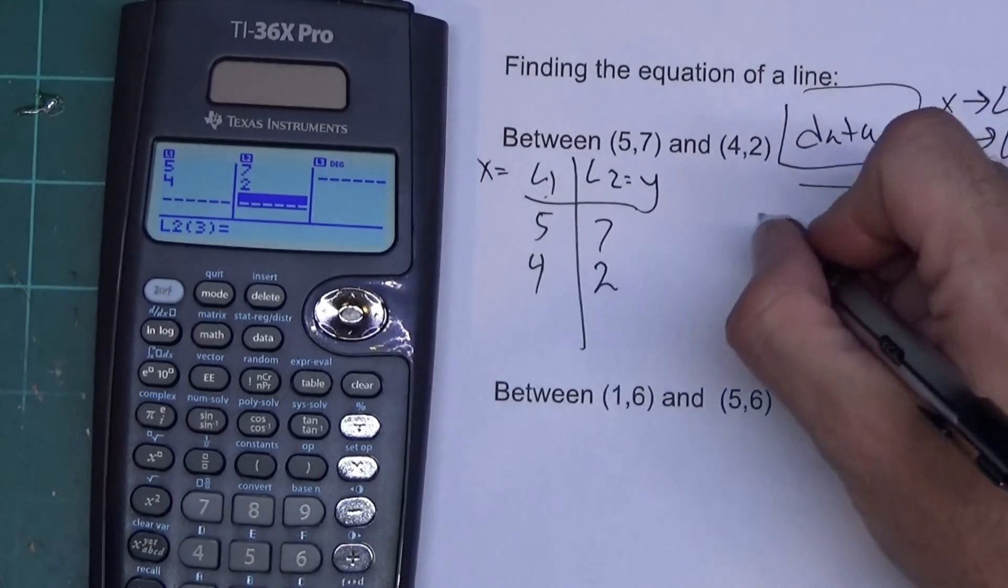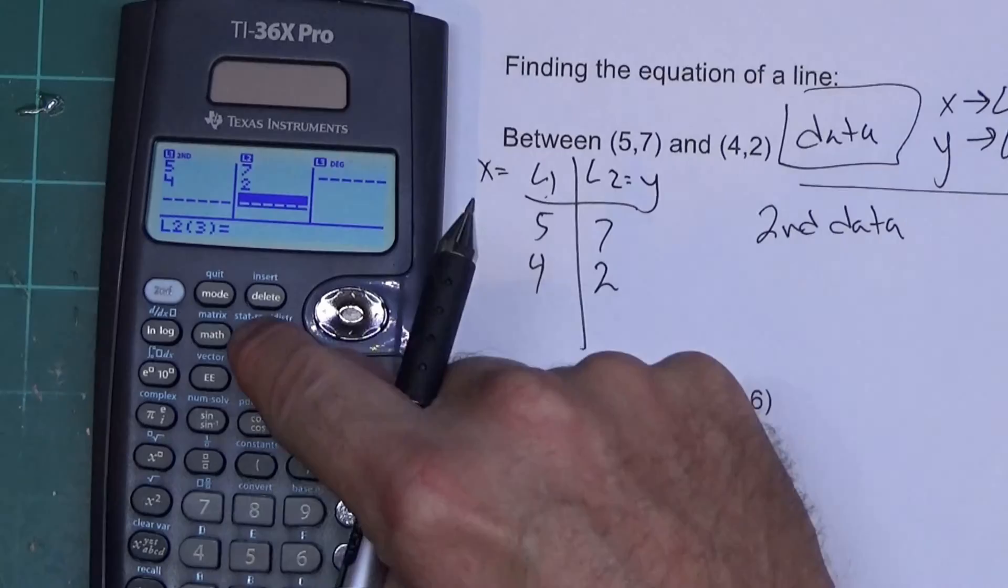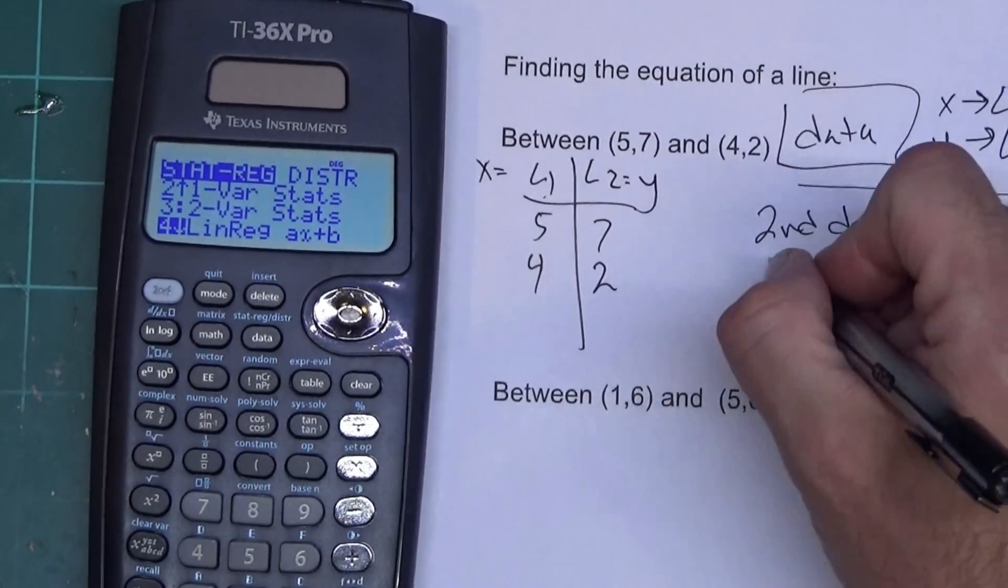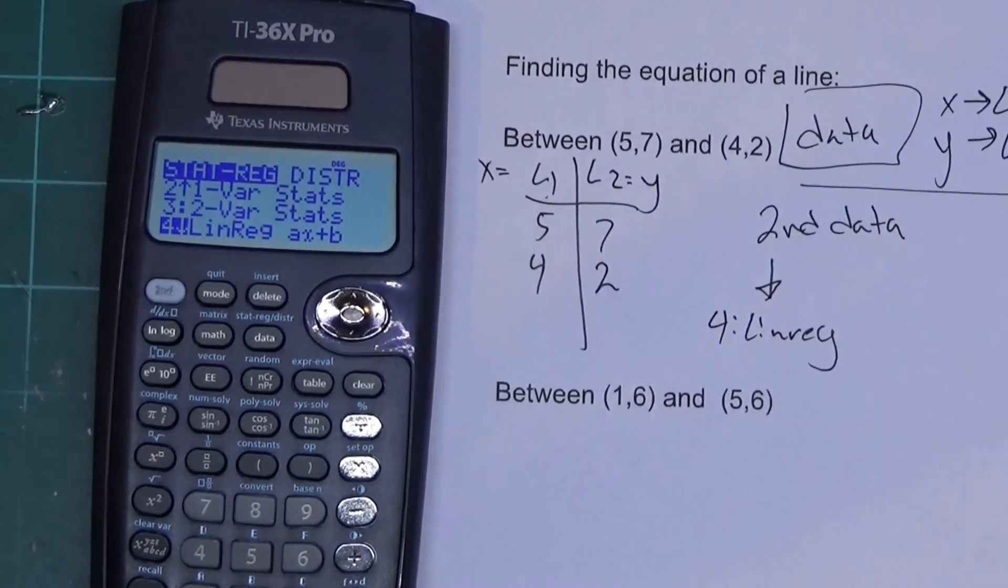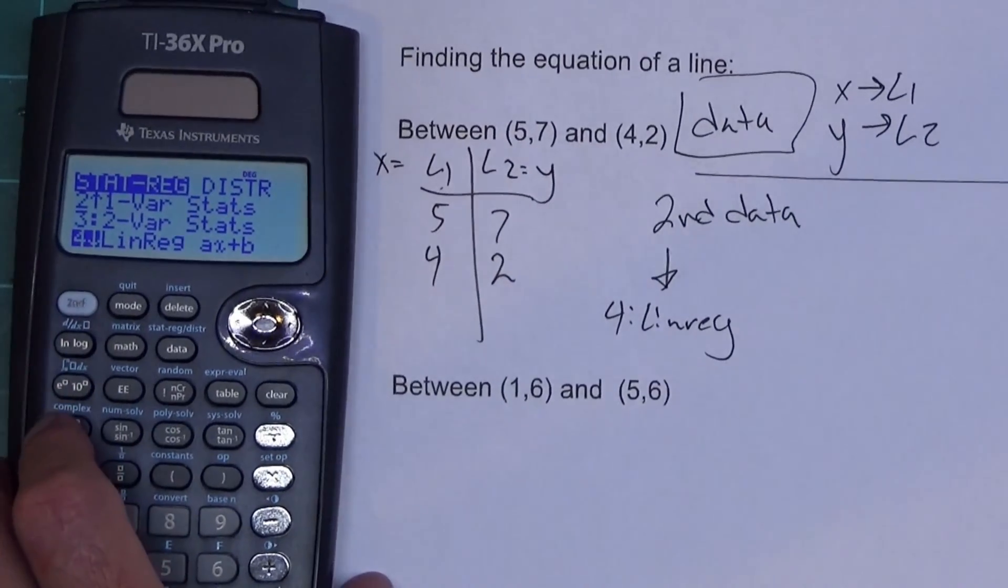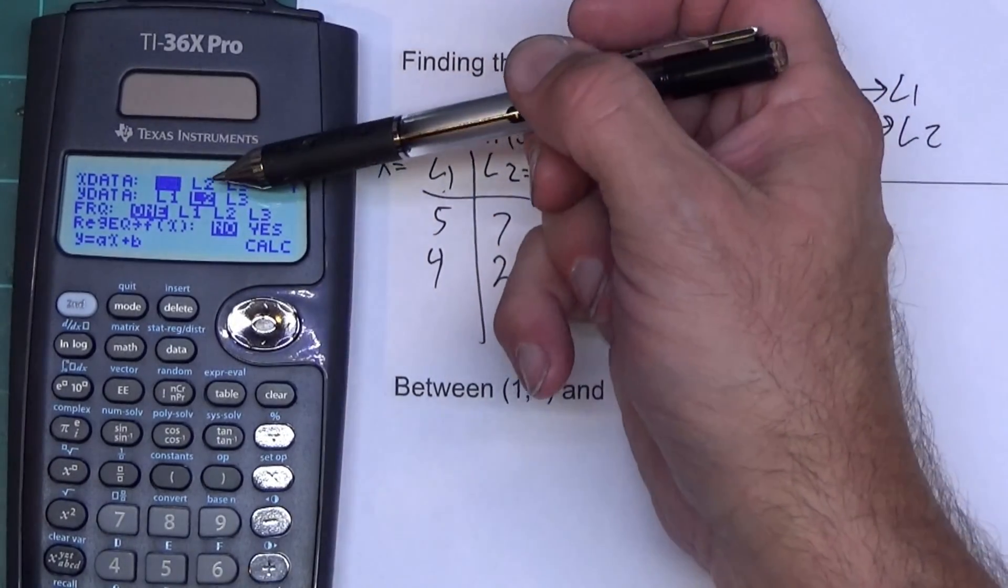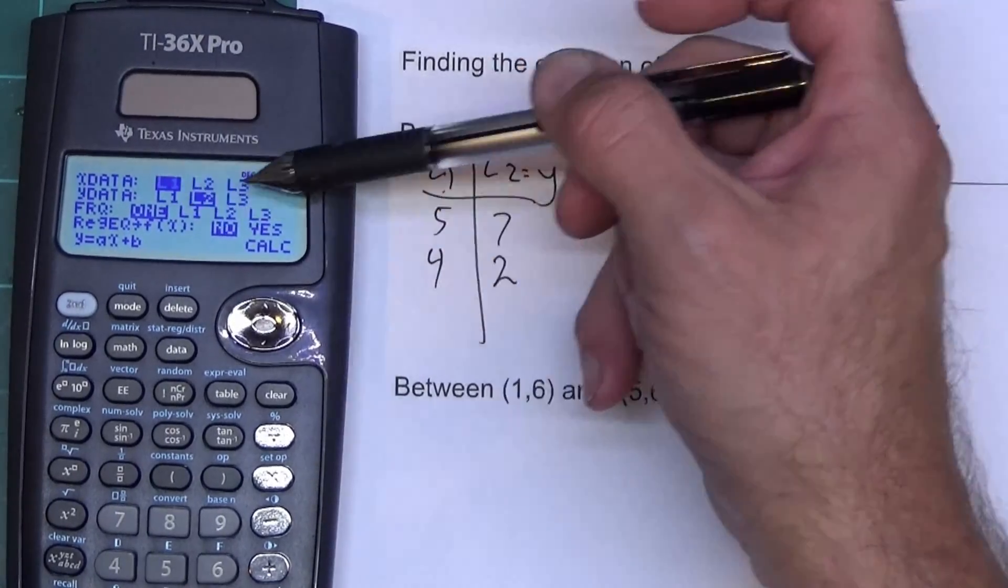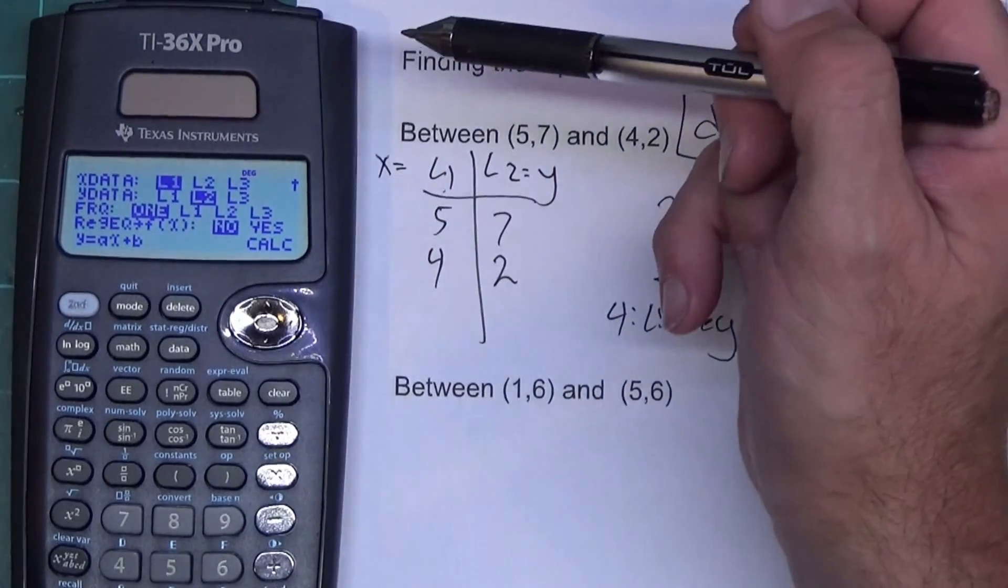Next what I'm going to do is hit second data. Okay, second data, and I'm going to scroll down. What I want is number four for LINRAG. Okay, now the defaults for LINRAG should work okay on this and let's press enter on number four. It's going to say X data in L1, Y data in L2, frequency one, leave that on one. There's really no reason to change that here. In regression equation, store it in f of x. Okay, I didn't know the calculator has a function list. Let's go ahead and tell that yes and see if we can figure out where that is in a minute, and I want to calculate that.